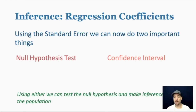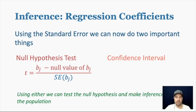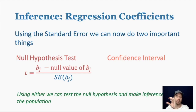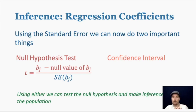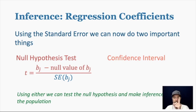With the standard error understood, we can use it to do two important things. We can get the null hypothesis test using the T statistic: our coefficient minus the null value — usually zero — divided by the standard error, which ends up being just our coefficient divided by the standard error. That gives us our T statistic and then our P-value. If the standard error gets bigger, our T statistic goes down and our P-value gets larger.